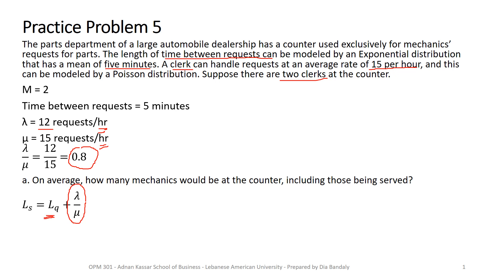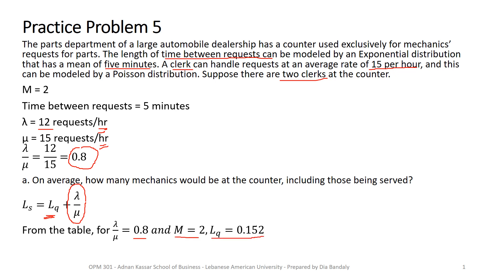To find Lq for a multiple server system, we refer to the table. We locate lambda over mu equal to 0.8, and within that group we go for M equal to 2. We simply read Lq to be 0.152. We add that to lambda over mu, which is 0.8, giving us Ls equal to 0.952 requests on average at any time.